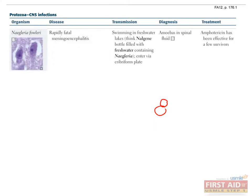Naegleria fowleri causes a fatal meningoencephalitis in patients who have been swimming in freshwater lakes. The protozoan enters the nose, penetrates the cribriform plate, and enters the brain. There is no treatment for this devastating infection, but the literature shows that amphotericin has been effective in a few survivors.